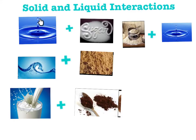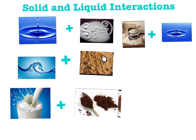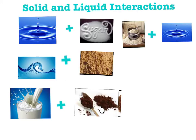Homogeneous and translucent: water plus sugar makes a sweet, sugary liquid. Heterogeneous and translucent: a solid-liquid mixture — it will turn into mushy dirt and the sand sinks to the bottom. Homogeneous and opaque liquid: milk plus chocolate powder is chocolate milk.